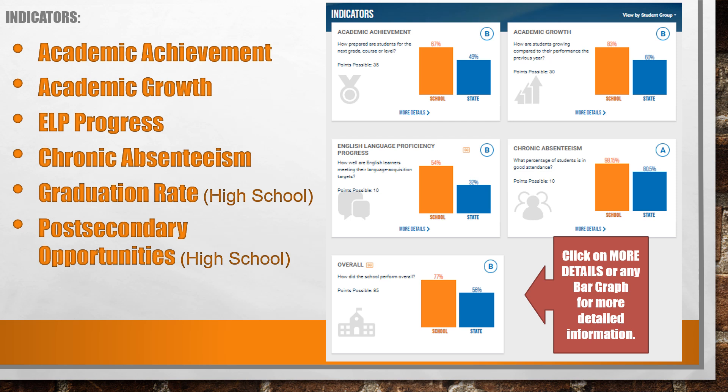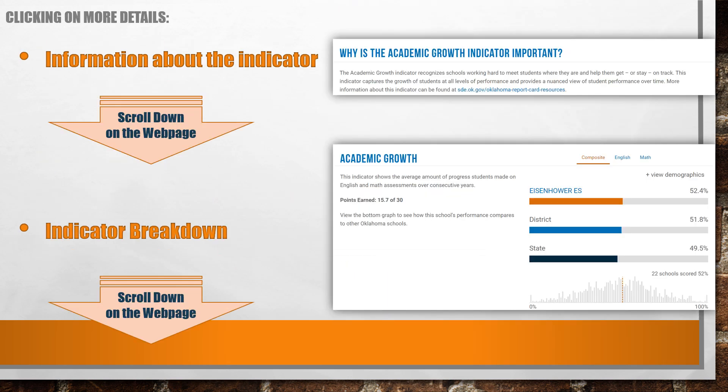If you click on more details or any bar graph, you will see additional detailed information. Clicking on more details provides an overview of the indicator and why it is important, as well as links to obtain further information. As you scroll down the webpage, you will also see an indicator breakdown which compares the site, district, and state averages. Data can further be broken down by subject and or demographic groups.